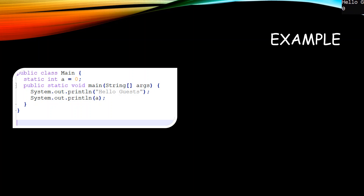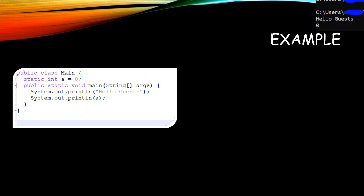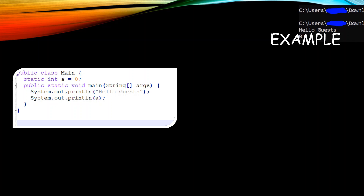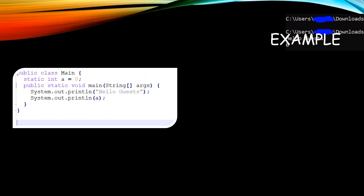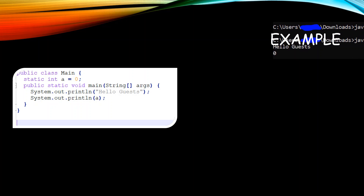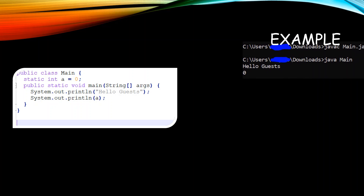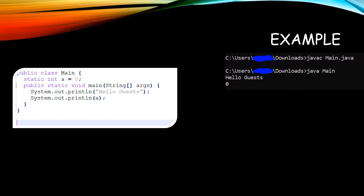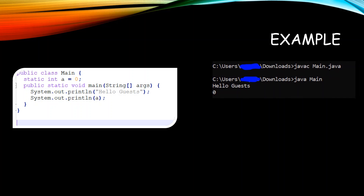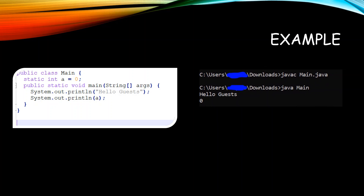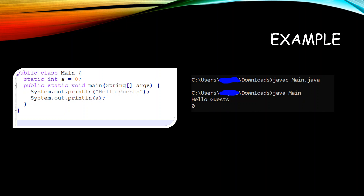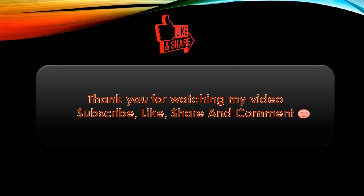Here is a small example: a main class has a static variable 'int a = 0', and the public static void main method which is invoked by the application is responsible for printing 'Hello Guest' and the variable 'a'. On the right-hand side of the screen, we are compiling the Java class using the 'javac' command and then executing it using the 'java' command. The output shows 'Hello Guest' and then zero as the variable value. Thank you for watching — please subscribe, like, share, and comment.